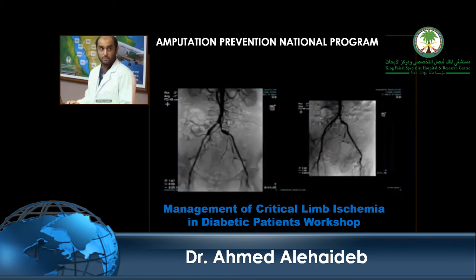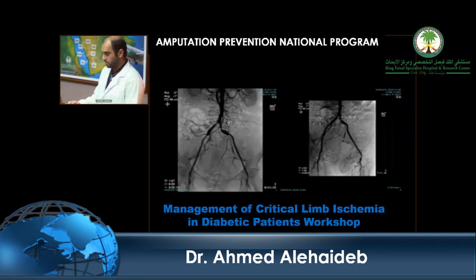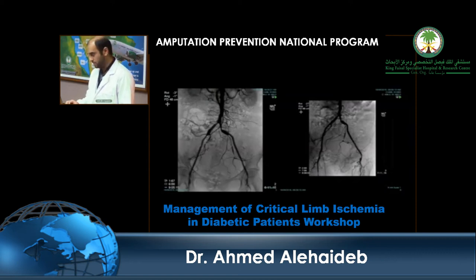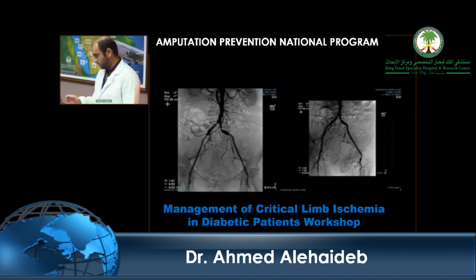We proceeded with an angiogram starting from the right side with a retrograde femoral puncture, five-French sheath, placing the catheter at the lower abdominal area. The angiogram showed mildly abnormal bilateral iliac arteries, and the flow was good, confirmed by angulation of the tube.